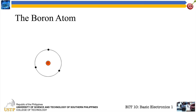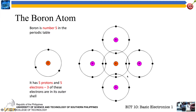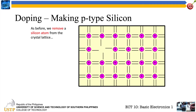Let's observe what happens to our silicon material if we dope it with boron. Boron has atomic number five in the periodic table. If we replace a silicon atom with boron in the crystal lattice, one silicon electron does not have any pair of electron from boron. So we now have a missing electron, and that missing electron will create a hole — a hole that is available for conduction.